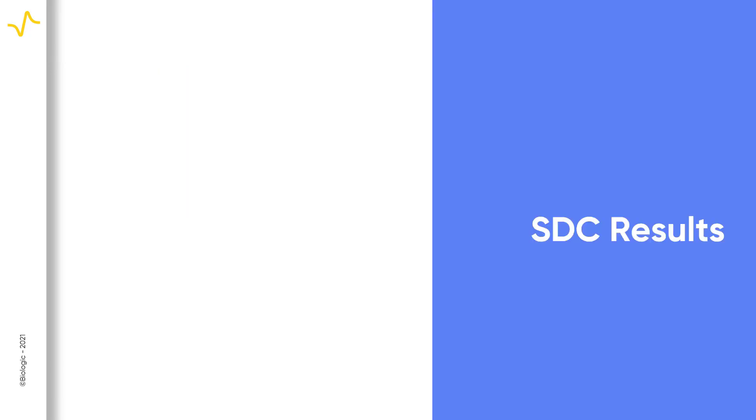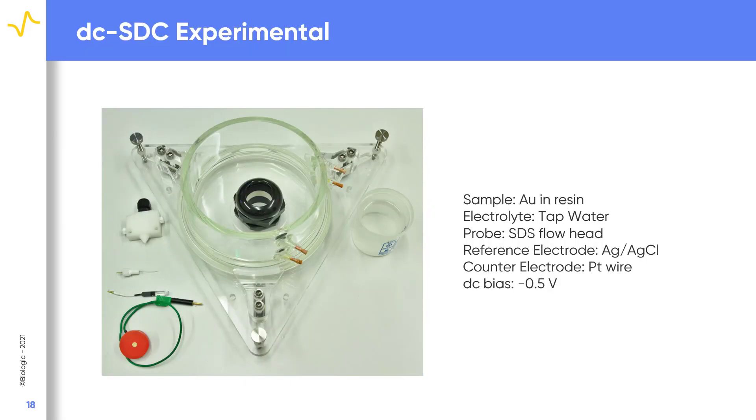When SDC measurements are performed on the SDS 470, what sort of data can be expected? In the following slides, we will show example results using the SDC flow head. We will first look at a DC-SDC measurement of the standard gold and resin sample. This is performed using tap water as the electrolyte. The sample is biased at minus 0.5 volts versus silver-silver chloride.